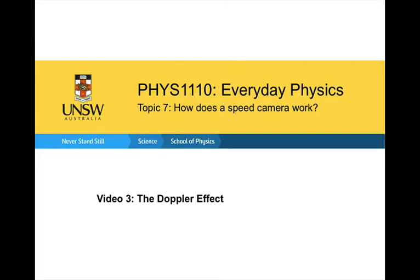This video continues the topic of how does a speed camera work, and we'll be looking at the Doppler effect. A speed camera works by sending out radio wave pulses, which are reflected off your car, and it measures how the frequency of that wave has been shifted. We're going to see how that change in frequency is related to the speed of your car.